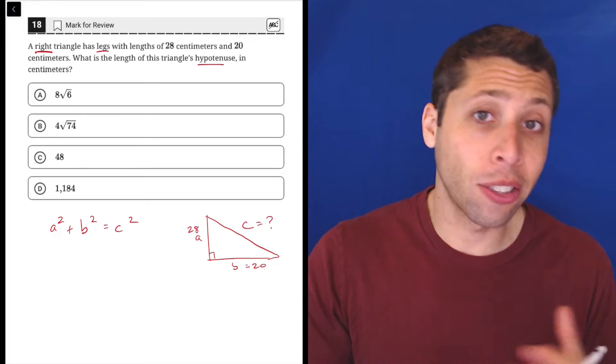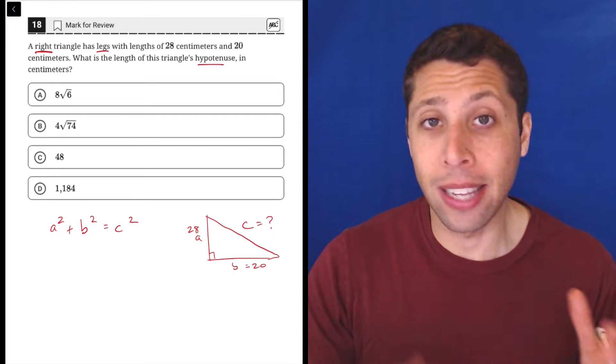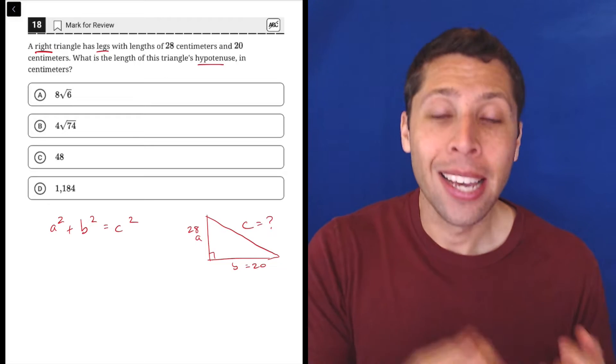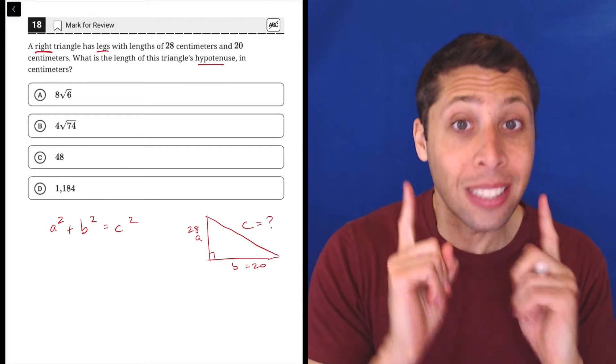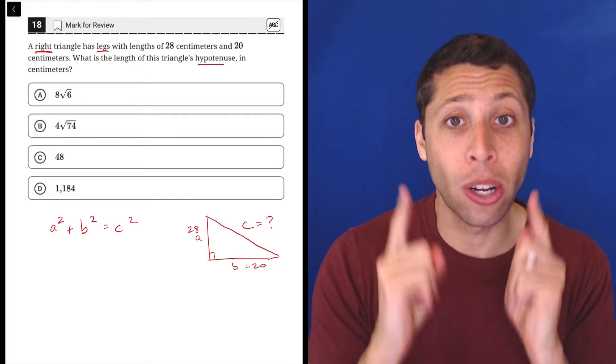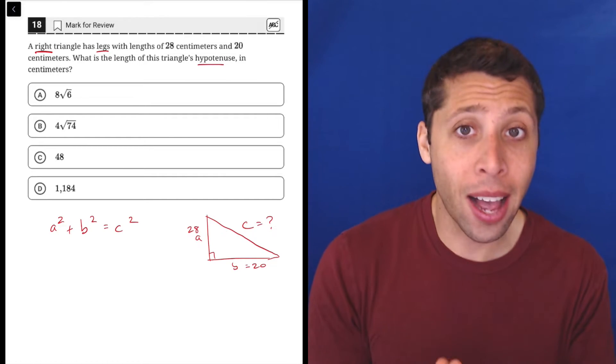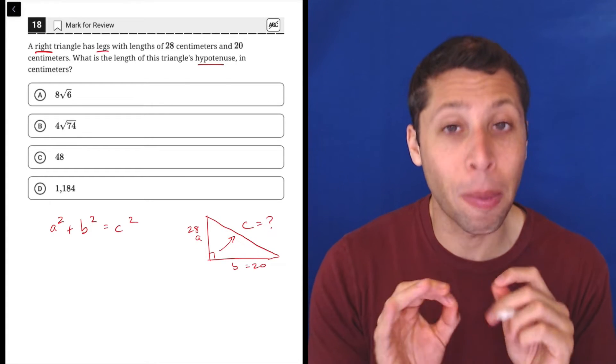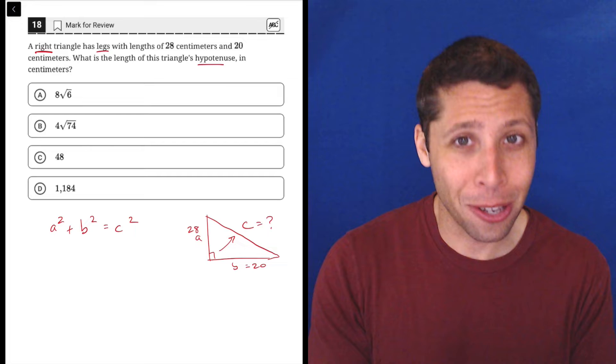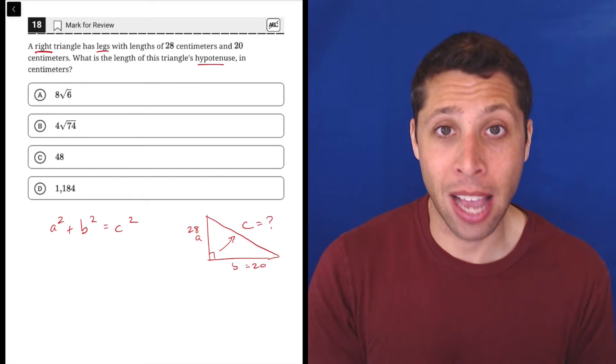Remember though, with right triangles, it doesn't actually matter which leg we think of as the A and which one we think of as the B. It's all the same, it doesn't matter. So that's just a convention, but the C does matter. The C is the hypotenuse that always has to be the side that is opposite the right angle. The longest side of a right triangle is by definition the hypotenuse, the C in Pythagorean theorem.